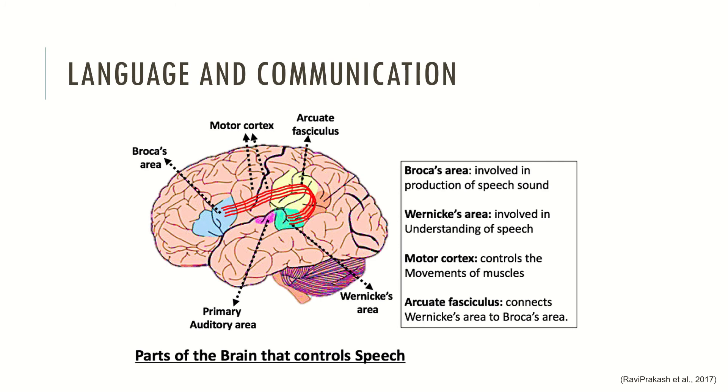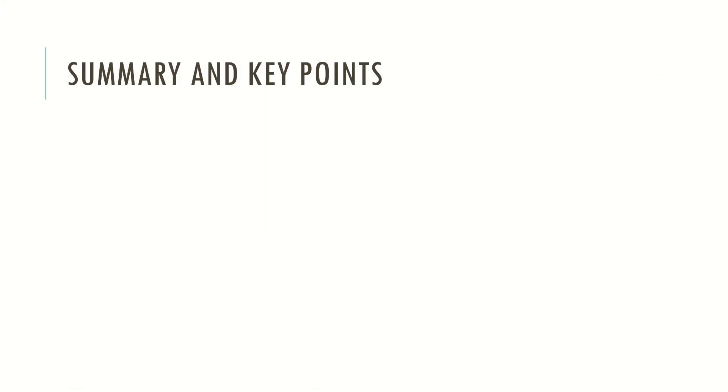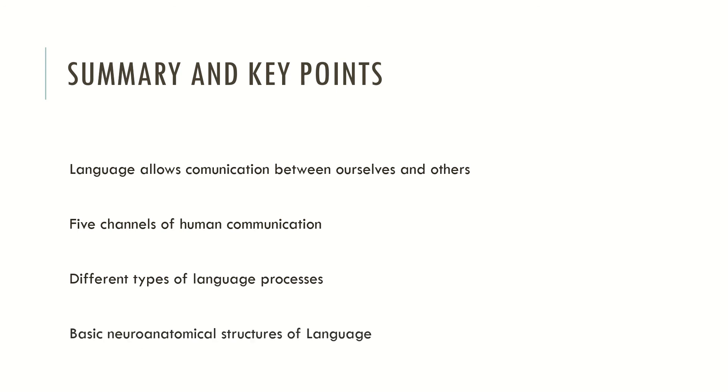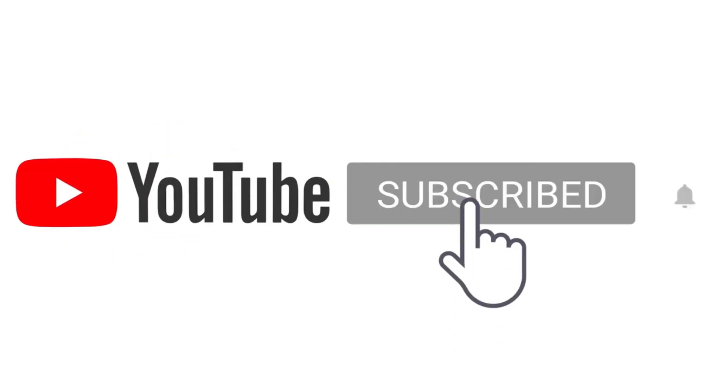So now let's see the summary and key points. Language allows communication between ourselves and others. We looked at five channels of human communication and saw that there are different types of language processes. We also looked at basic neuroanatomical structures of language. It's all for today — don't forget to see the video description if you want to see the manuals and books I recommend. If you like what I'm doing, please like, share and subscribe to support the channel. You can leave a comment expressing your thoughts. Welcome to MindBrainTalks and I hope to see you in the next video. Bye!